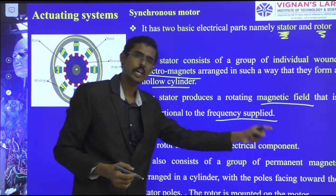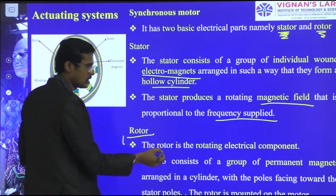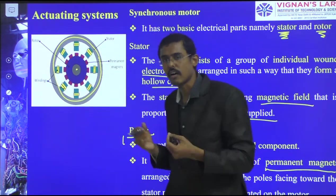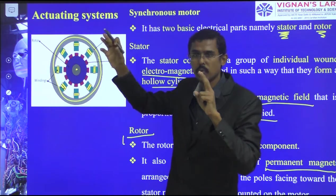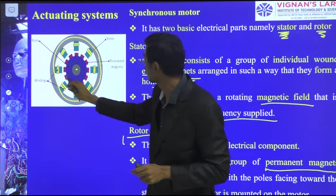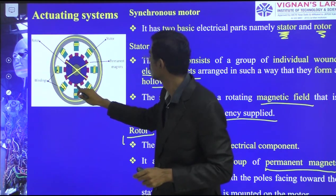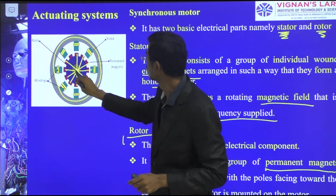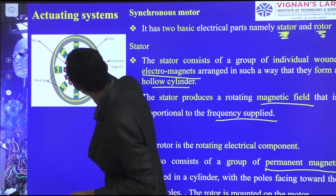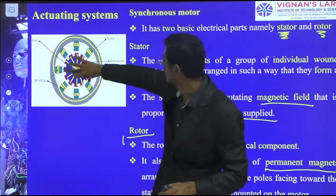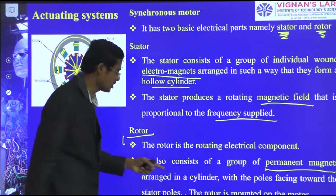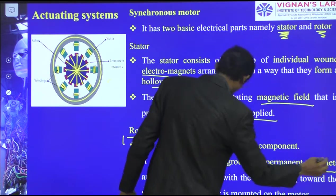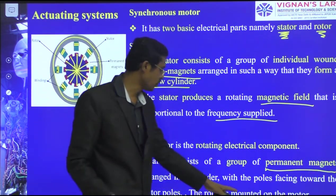About the rotor: it is the rotating electrical component which contains a permanent magnet. It also consists of a group of permanent magnets — in the working principle we used only one north and south pole, but here multiple magnets are used. These permanent magnets are arranged in a cylindrical format with poles facing towards the stator, and the rotor is mounted on a shaft.